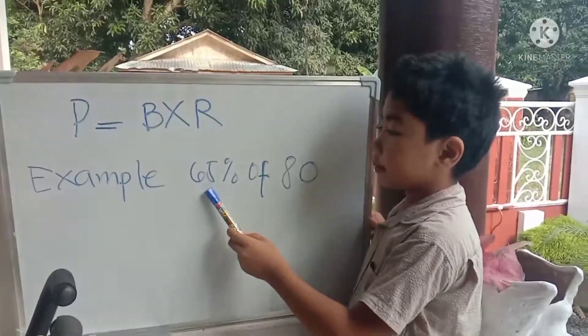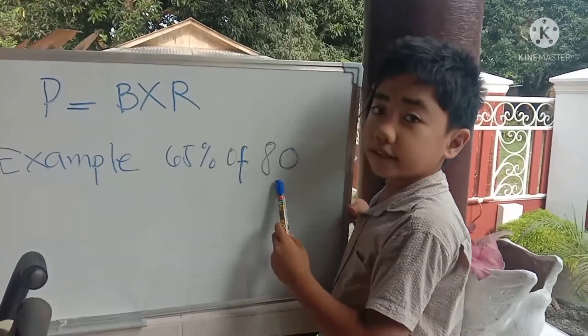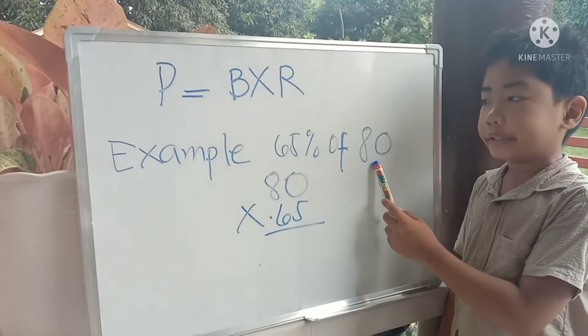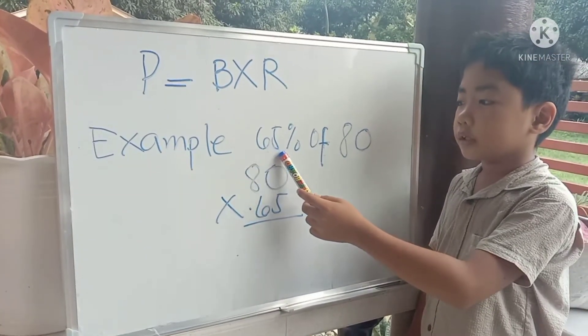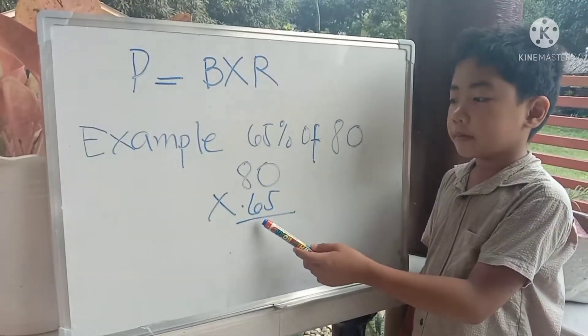To find the percentage, let us follow this formula. Example: 65% of 80. 80 is the base, 65% is the rate. Change 65% into 0.65.